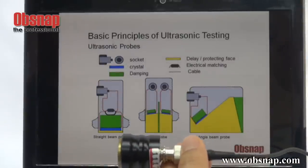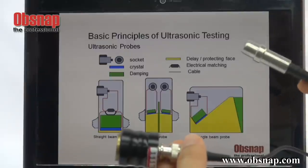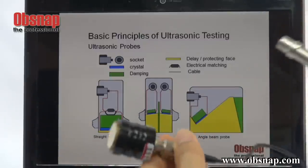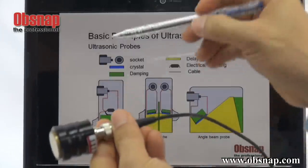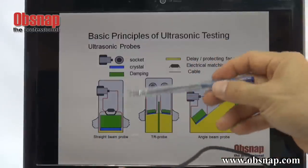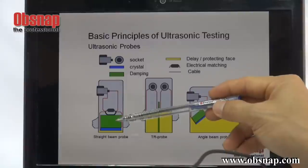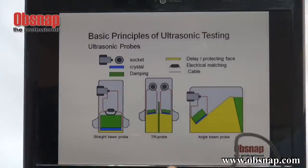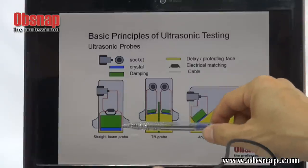Here are the three main sensors we use for ultrasonic testing purposes. This is called the straight beam probe. This is the crystal, this is the damping material, and its purpose is actually to improve the amplitude, the width, and the resolution of the echo for display purposes.